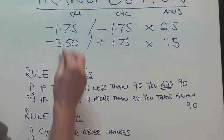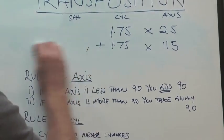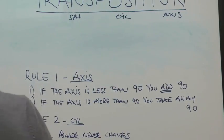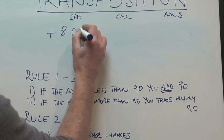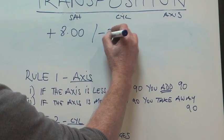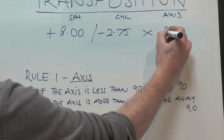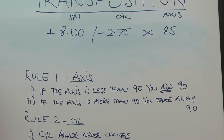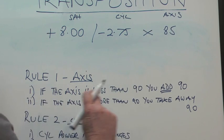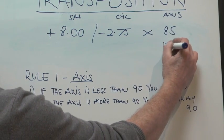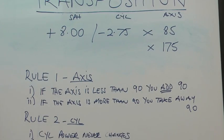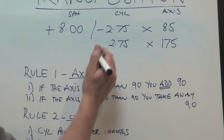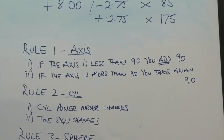Let's try another example. We'll try a plus and a minus. So a plus sphere with a minus cylinder. Let's say we've got plus 8 with a minus 2.75, axis 85. So let's transpose that using these same rules as before. The axis is less than 90, so we're going to add 90 to that. So that becomes 175. The cylinder power never changes. So that's 2.75. The sign always changes. So that's a plus. So we've already done that.